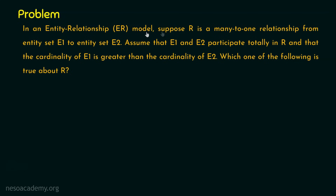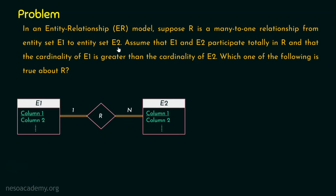We have the entities and the relationship. R is a many-to-one relationship. The key information here is R is the relationship which holds a many-to-one relationship from entity set E1 to entity set E2. E1 is one entity set, E2 is another entity set, and R is the relationship. This R is actually holding a many-to-one relationship. We are assuming that E1 and E2 participate totally in R, so E1 is also participating totally in the relationship R.